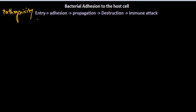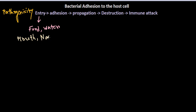Entry to the host cell can be accomplished via different entry regions like the mouth, nasal cavity, intestinal region, and through food and water — especially entries via food and water in most cases. The port of entry can be the mouth and also respiration via the nasal cavity.